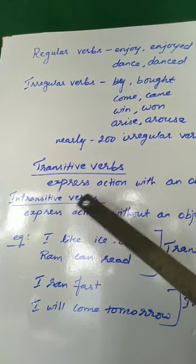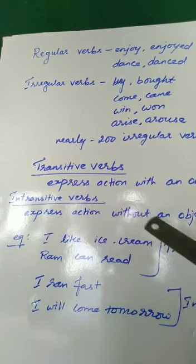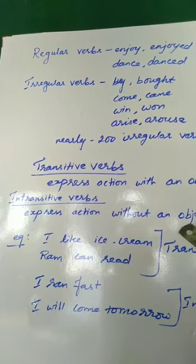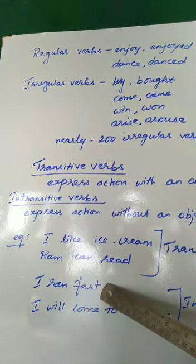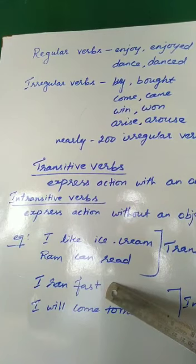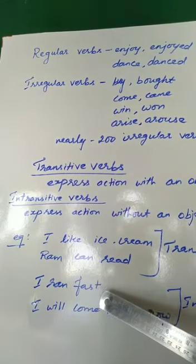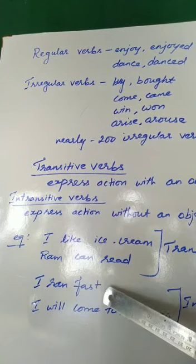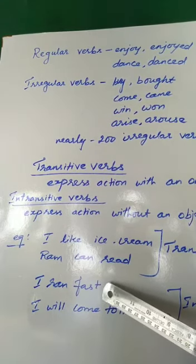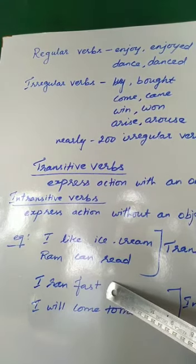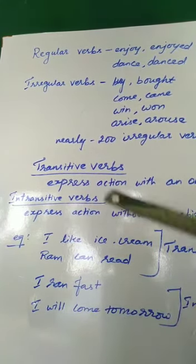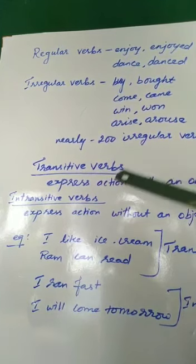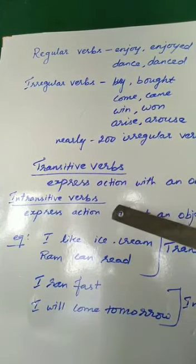Whereas intransitive verb expresses an action without an object — intransitive verbs will not have any object at all. For example: I ran first. How did I run? — it answers 'how', not 'what'. So when it does not answer the question 'what', it is said to be an intransitive verb. Another example: I will come tomorrow. Transitive verbs carry an object, whereas intransitive verbs do not carry an object.